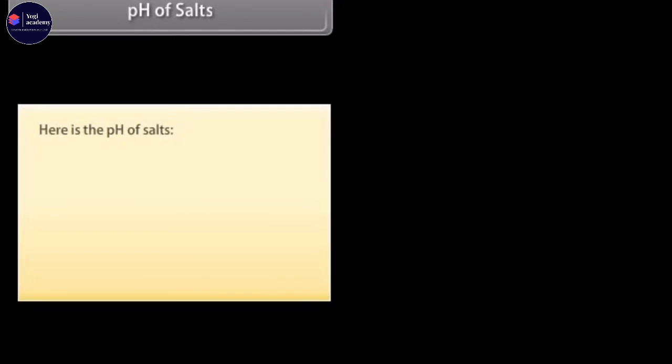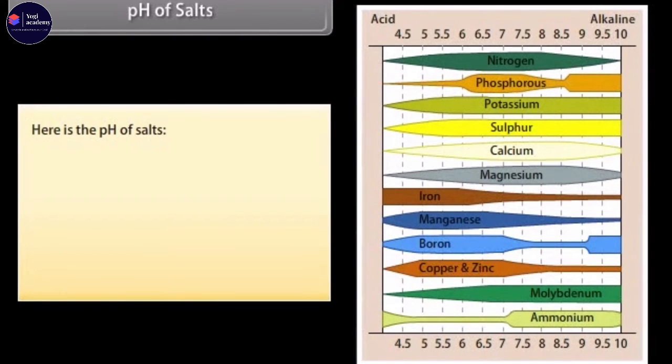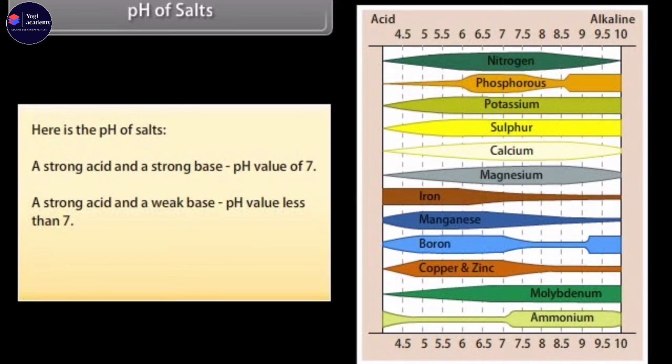Here is the pH of salts. A strong acid and a strong base, pH value of 7. A strong acid and a weak base, pH value less than 7. A strong base and a weak acid, pH value more than 7.